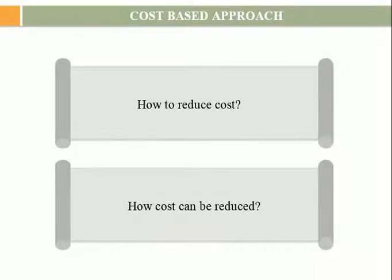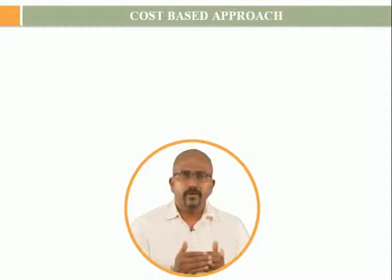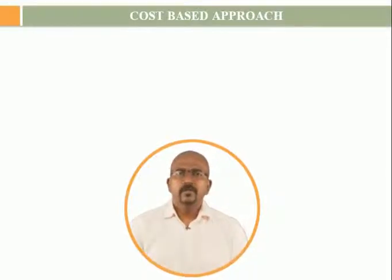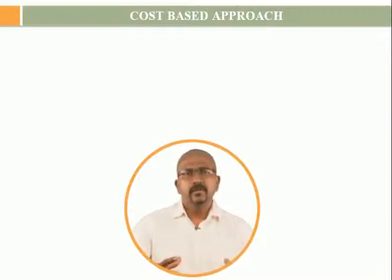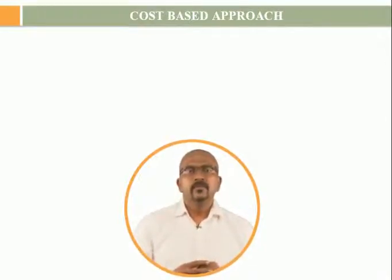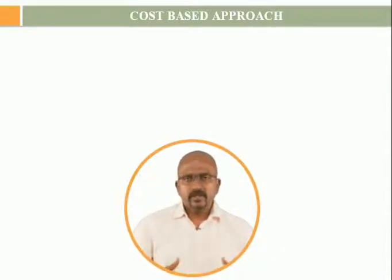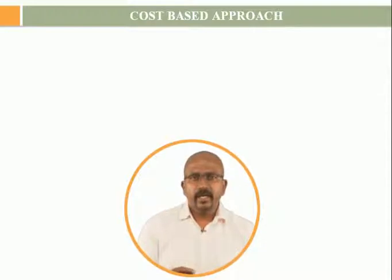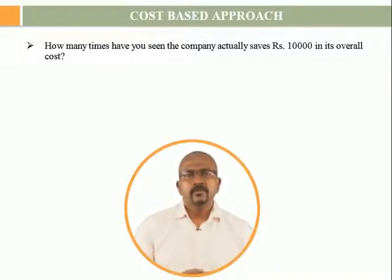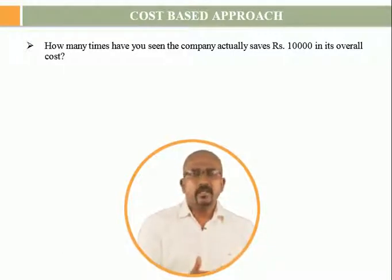How is this done? An assumption is made, a mathematical formula is used, and a calculation is done. Very often we see a small project which does a mathematical calculation and says: I have saved the cost of this activity by 10%, and the overall saving to the company would be 10,000 rupees. The person is rewarded for bringing down the cost. However, how many times have you seen the company actually save 10,000 rupees in its overall cost? Somewhere this person feels that their effort was negated by somebody else doing their activity at a higher cost.